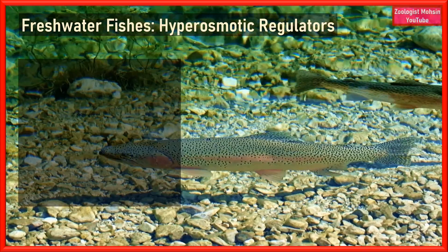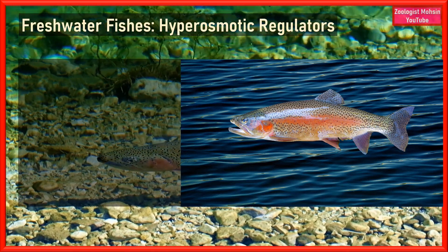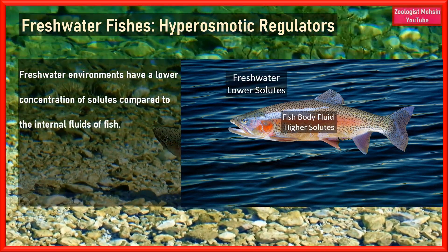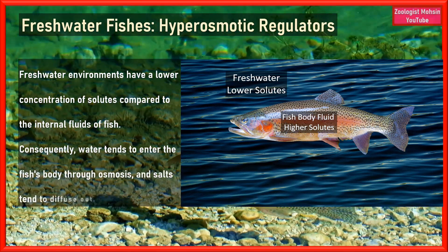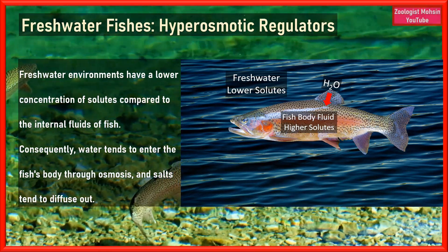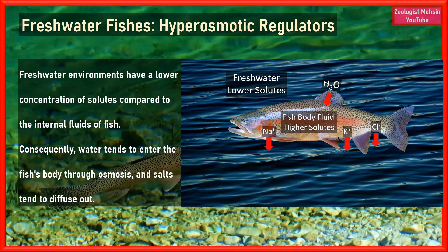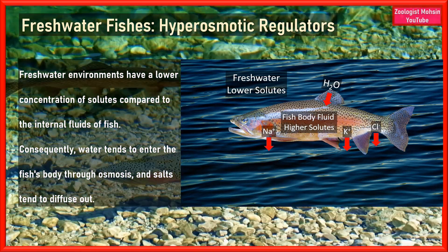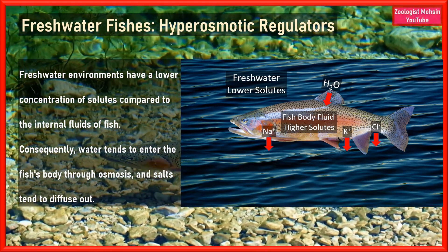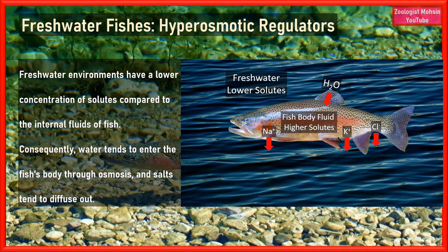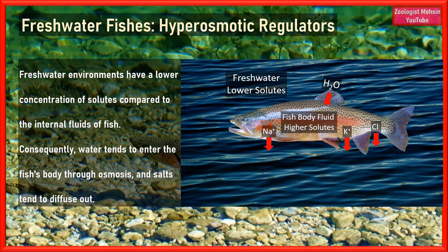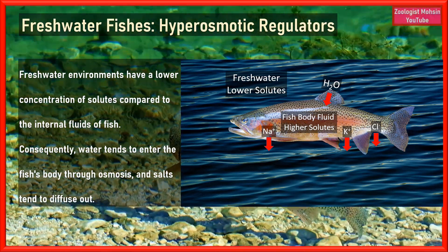Let's start with freshwater fishes, which are also hyperosmotic regulators. Freshwater environments have a lower concentration of solutes compared to the internal fluids of fish. Consequently, water tends to enter the fish's body through osmosis and salt tends to diffuse outside. Freshwater fishes therefore face two major osmoregulatory challenges: first, to balance salts or ions in the body, and second, to get rid of excess water.